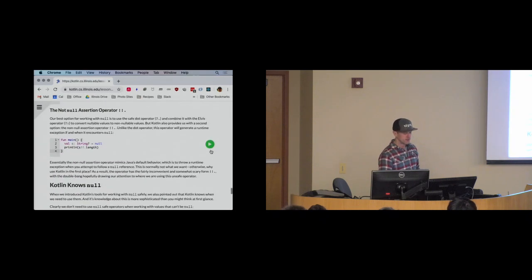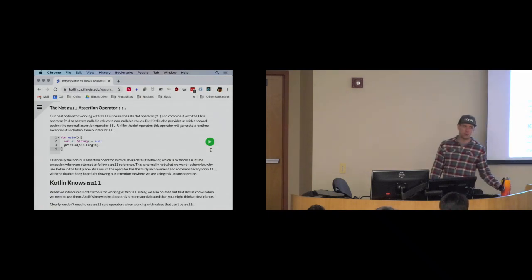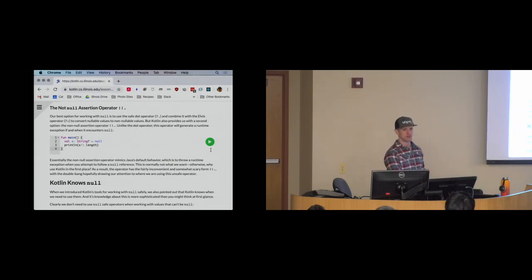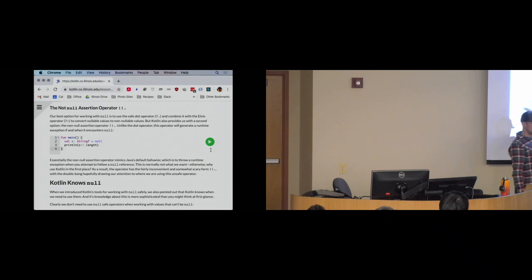The second option is the non-null assertion operator — two bangs and a dot: `!!.`. This is your escape hatch. If Kotlin determines a variable might be null, you must either use the safe dot operator or this non-null assertion operator. This will throw a null pointer exception if it encounters null — the same behavior as Java. You can catch that in a catch statement.